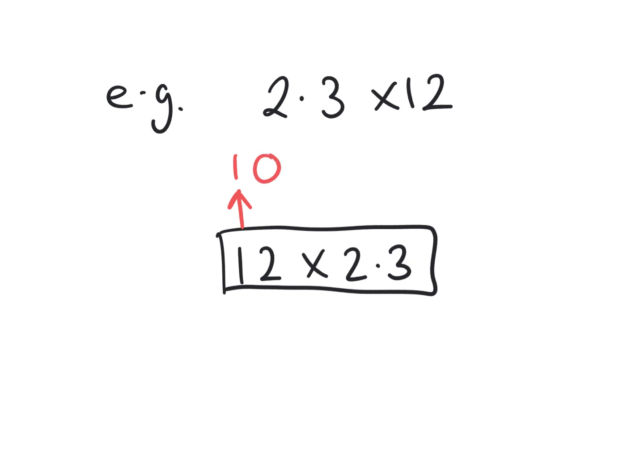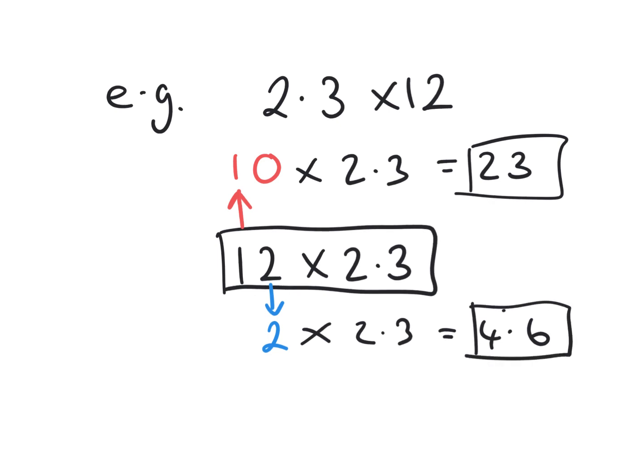I can multiply that by 2.3, and that again removes that decimal, so one space bigger becomes 23. And then I can calculate with the 2 times 2.3, which is 4.6. If you have decimals like this, it's always handy to think of money—£2.30 doubled is £4.60. And then we simply add our two values together. So 23 add 4 is 27, for a final answer of 27.6.